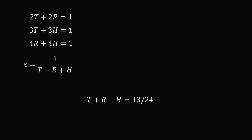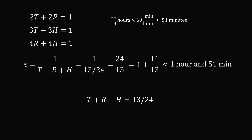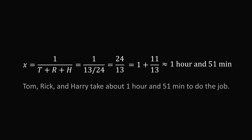One final step: substitute back so that x equals 1 divided by 13/24, which equals 24/13, or 1 plus 11/13 hours. Converting 11/13 hours to minutes: multiply by 60, which is approximately 51 minutes. So x is approximately 1 hour and 51 minutes. It takes all three of them — Tom, Rick, and Harry — about 1 hour and 51 minutes to do the job.